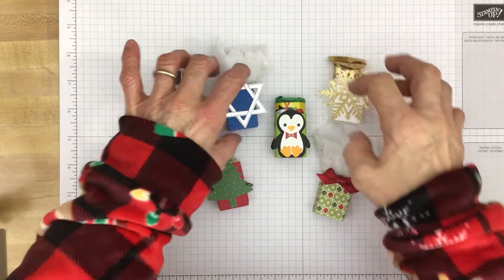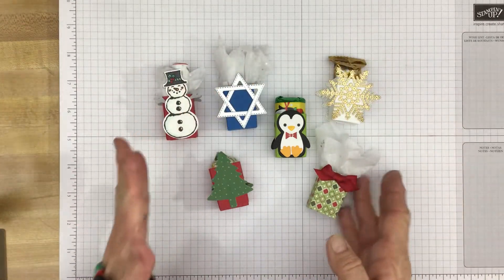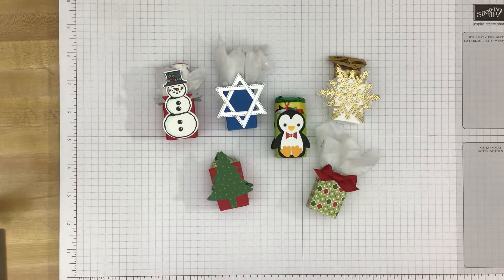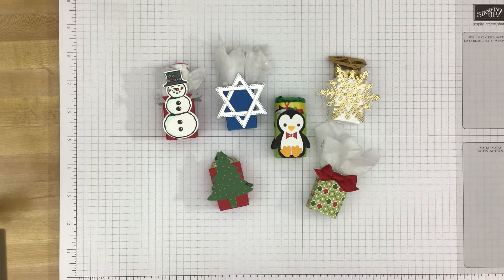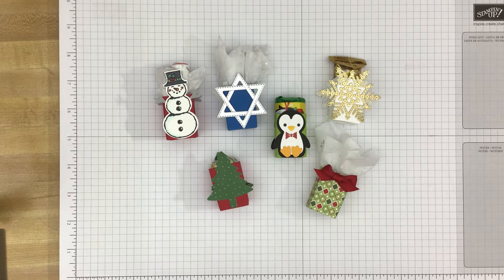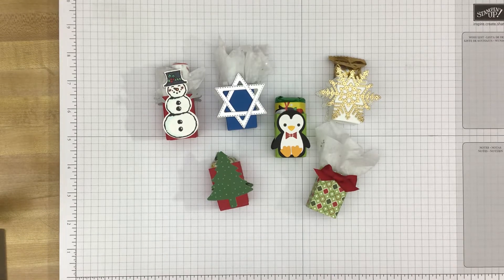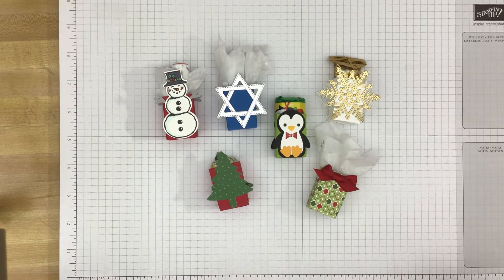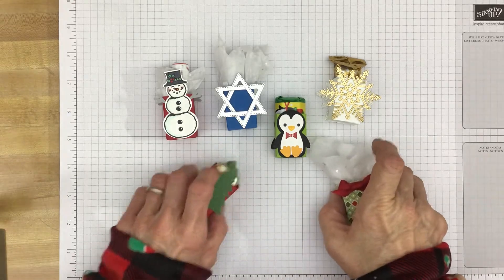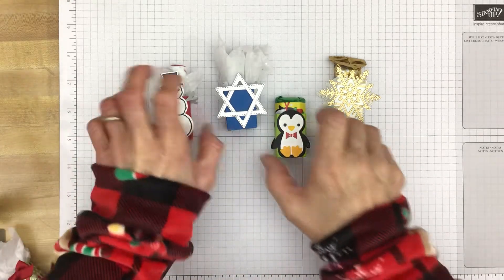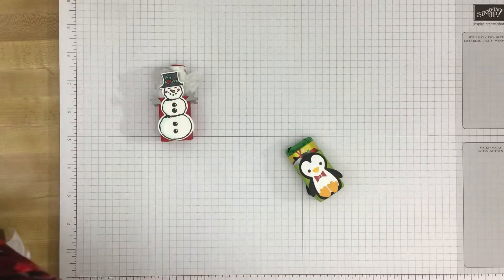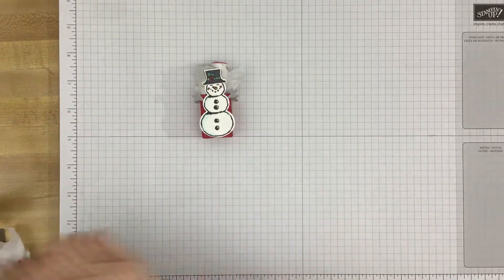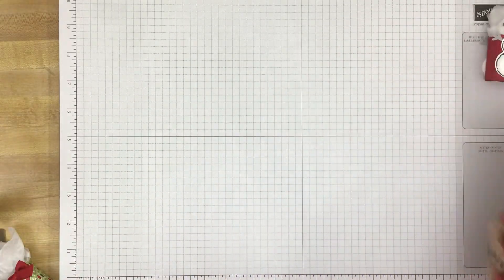So once you learn how to make the box then it's just a matter of decorating the box any way you wish. So I thought I would walk you through how I made the box and we'll go from there. So let me set these aside for now. I think we're going to make the snowman one together. Put him over here for now.